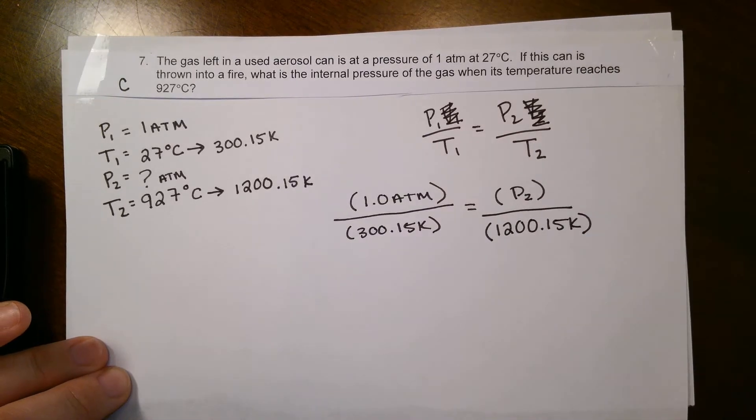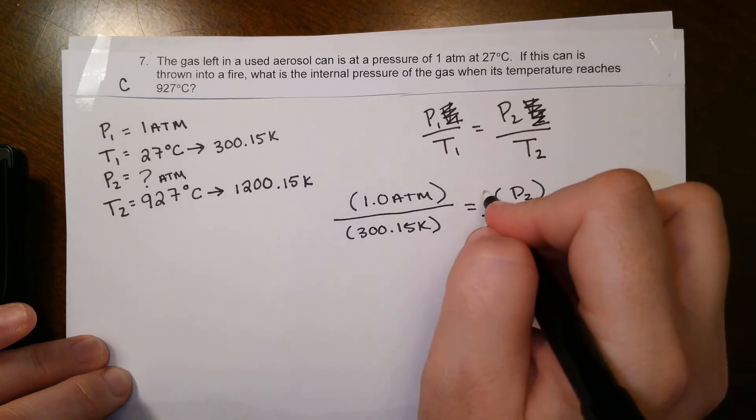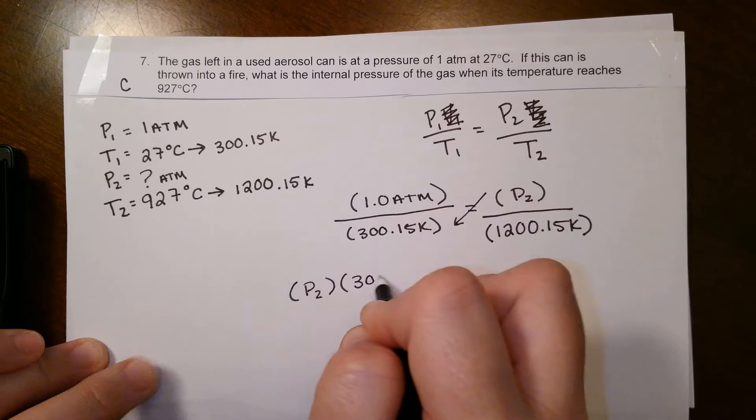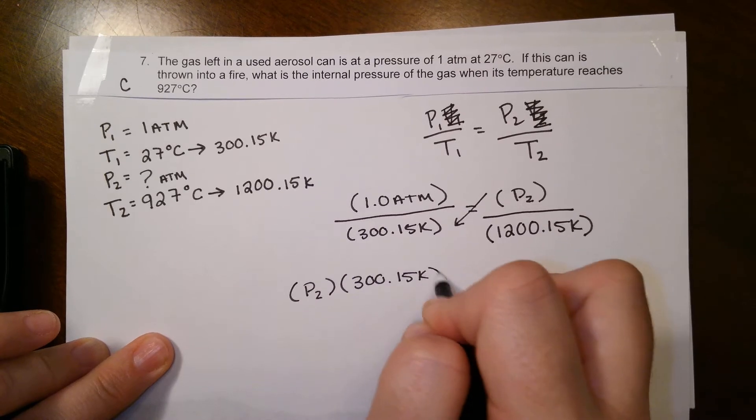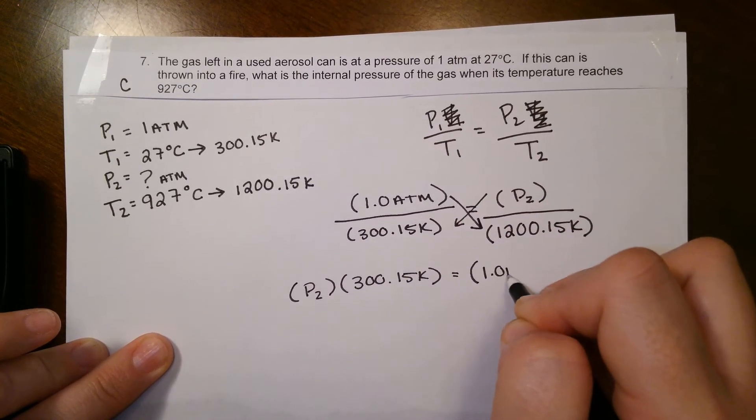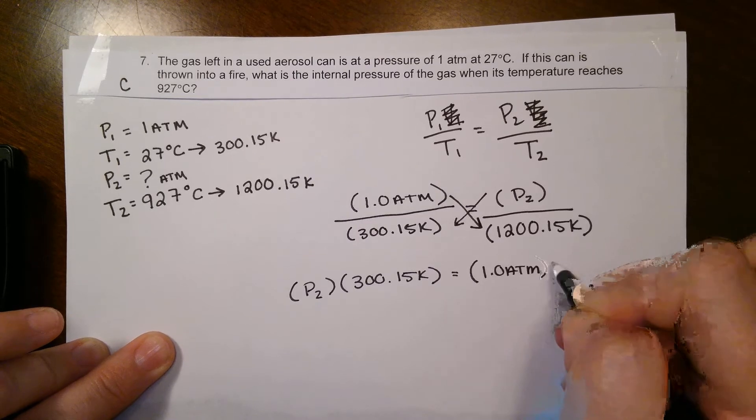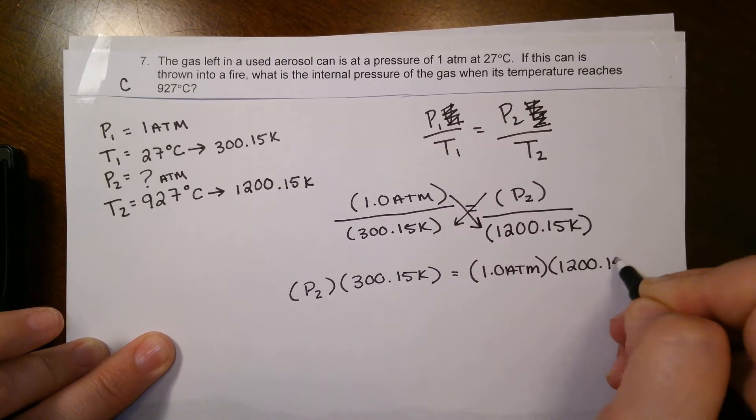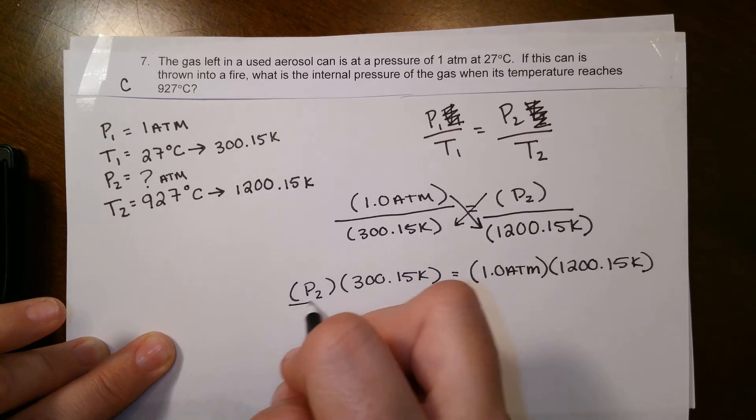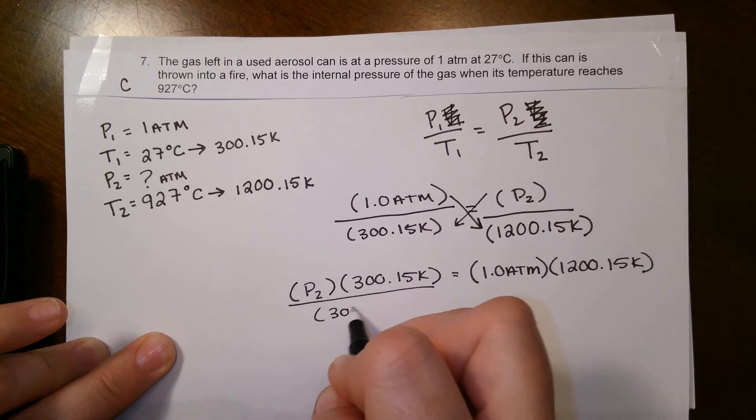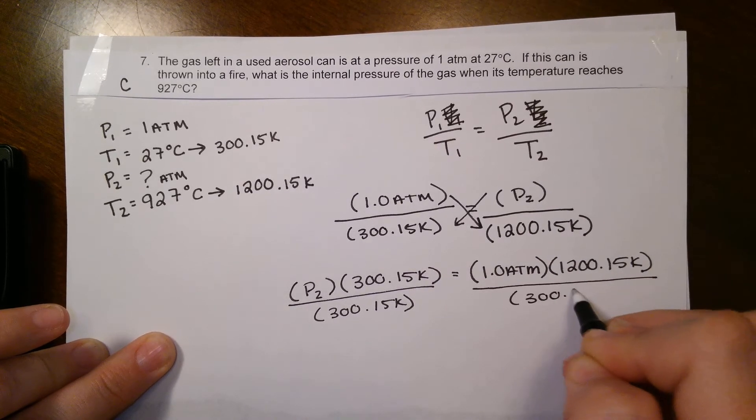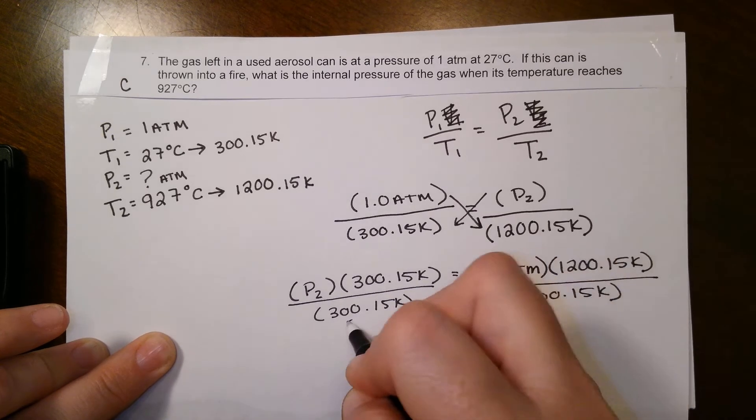We're gonna go ahead and cross multiply those to solve for P2. So it's gonna be P2 multiplied by 300.15 Kelvin. Cross multiply that other side, 1.0 atm times 1200.15 Kelvin. We're gonna want to isolate P2, so we're gonna divide both sides by 300.15 Kelvin. It cancels.